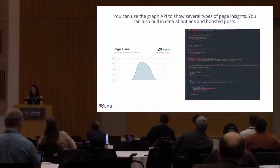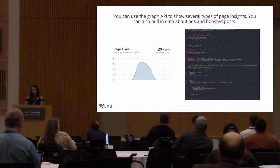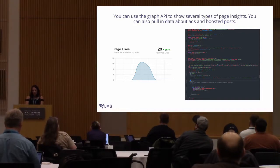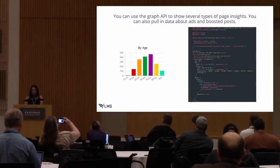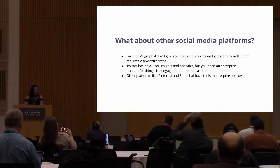There's other data you can show — a chart of page likes and most page views, which is about the same code just calling for different information. You can view audience demographics by gender or by age. You can also pull in information about ads and things like that if you want to.